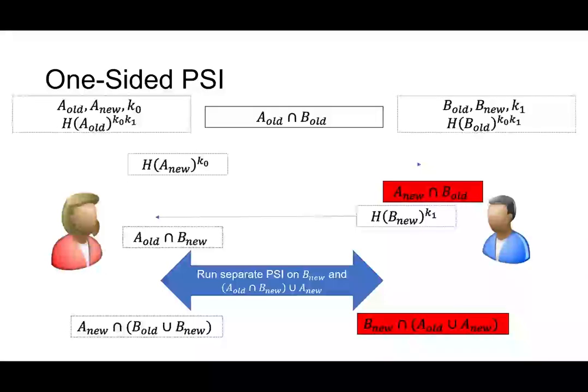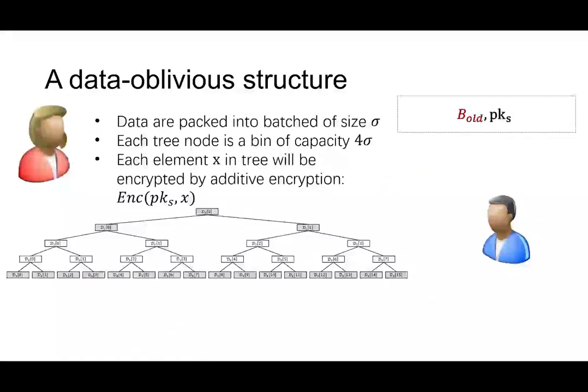Consider the one-sided PSI where Alice is a client and Bob is the server. Now Bob learned too much additional information in the previous protocol. So we are going to adopt a new protocol. It's based on data oblivious data structure. And for each entry in this data structure, it's going to be a batch of size sigma. And each tree node has capacity of four sigma. And why is it four sigma? Because we want to avoid overflow in case that the random distribution is not good enough. And each element will be encrypted by Bob's secret key using this additive homomorphic encryption. Here, gray node means that it's filled with expected sigma elements and blank node means that there's no data.